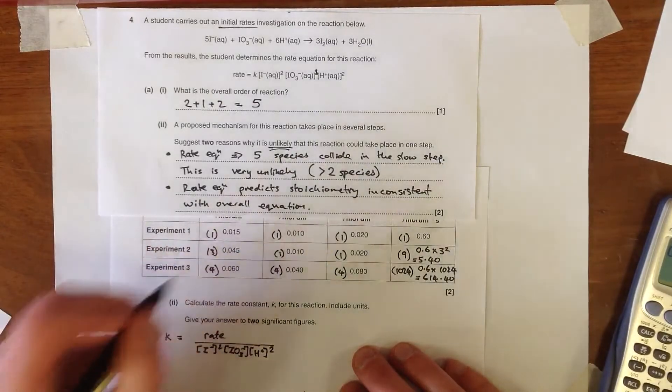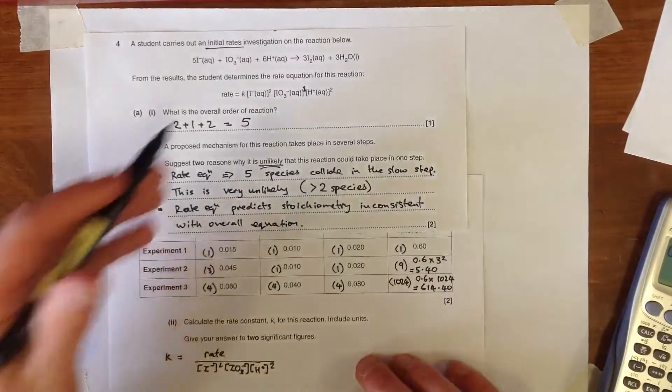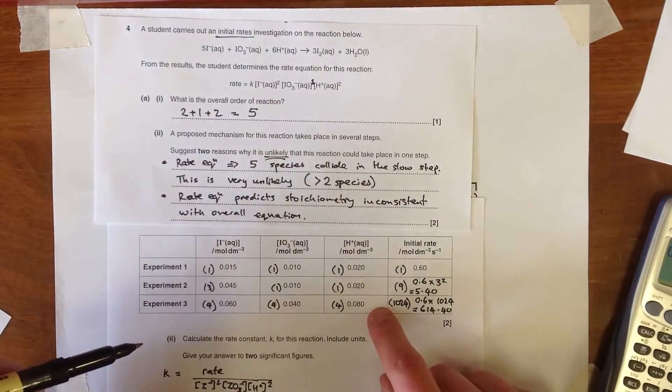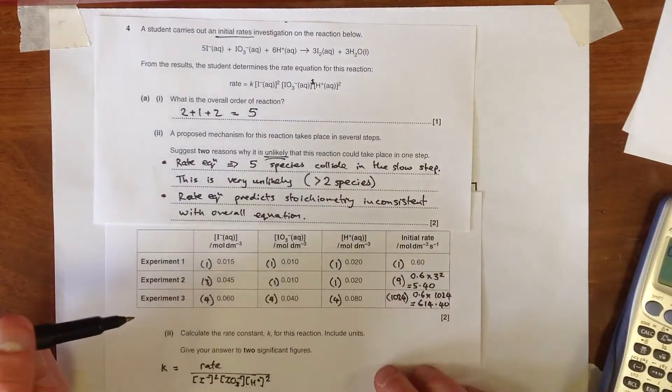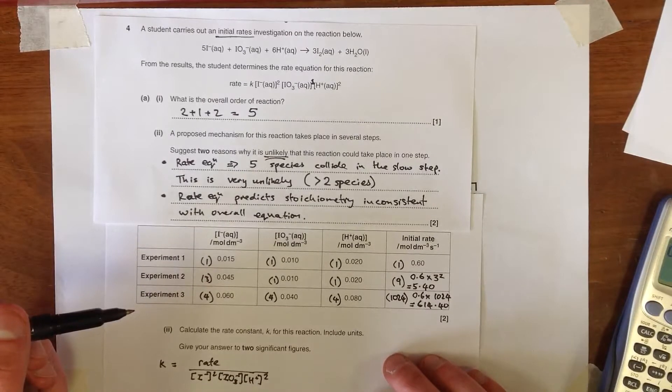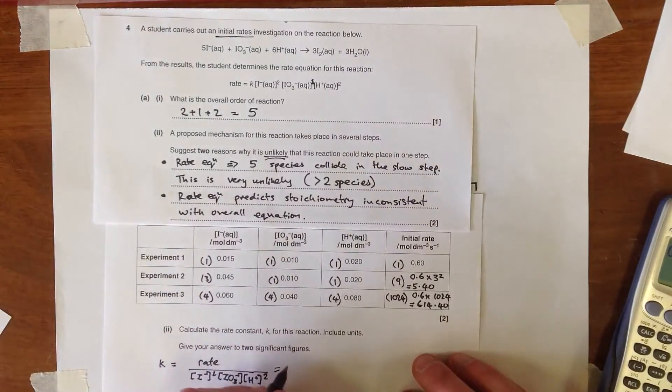That's a good idea, you could use any of the rows of this table and you should get the same answer, but as they've given you all the data in the first row, it's good to use that just in case you made a mistake with either of these two calculations. And so if we plug our numbers into that, we go on to find that our rate should be this number here, so 6 and then...